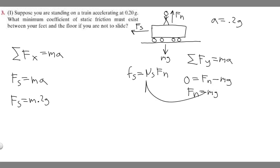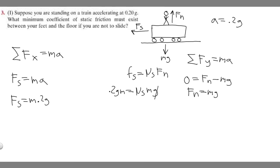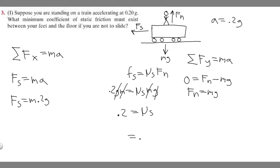Now we can plug everything into the formula. F sub s equals 0.2g times m, which equals mu sub s — the coefficient of static friction — times F sub n, which we know is m times g. Notice we have g and m on both sides, so they cancel. We're left with 0.2 equals mu sub s. So the minimum coefficient of static friction is equal to 0.2.